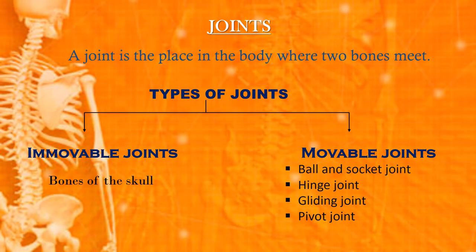A joint is the place in the body where two bones meet. Joints in the body allow easy movement. These joints are of two types: immovable and movable.